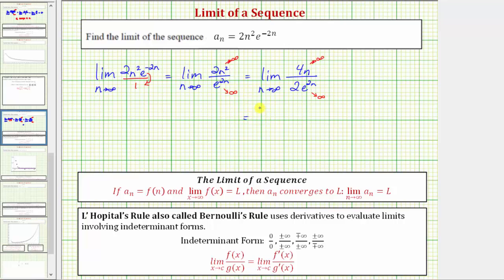So this is equal to the limit as n approaches infinity of: in the numerator we have the derivative of four n, which would be four. In the denominator we have the derivative of two e to the two n with respect to n. Again this requires the chain rule: it would be two times e to the two n times two, or four e to the two n. In this form, notice how the numerator is just the constant four, so it's no longer affected by n, but the denominator is still going to get larger and larger and approach positive infinity.